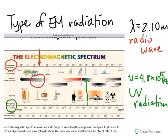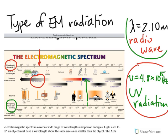And that's how to use the electromagnetic spectrum table to identify what type of electromagnetic radiation it is, depending on whether or not you're given the wavelength or the frequency. I'll talk to you guys soon. Thank you.